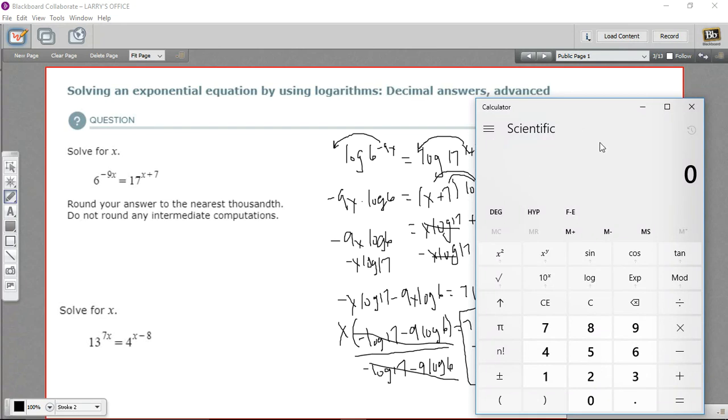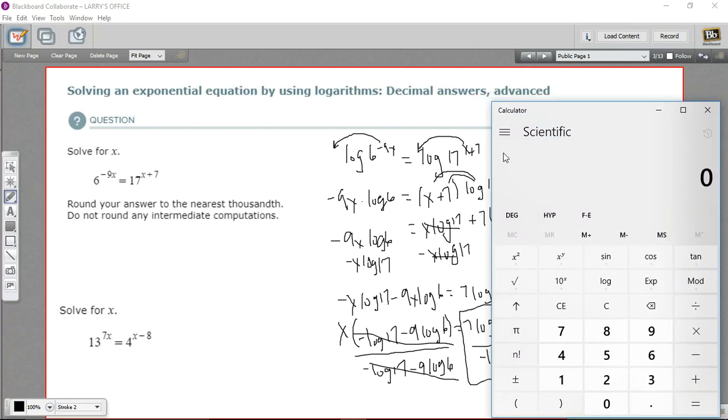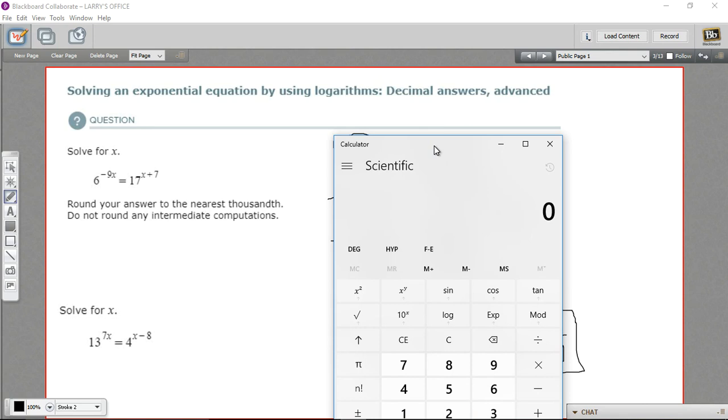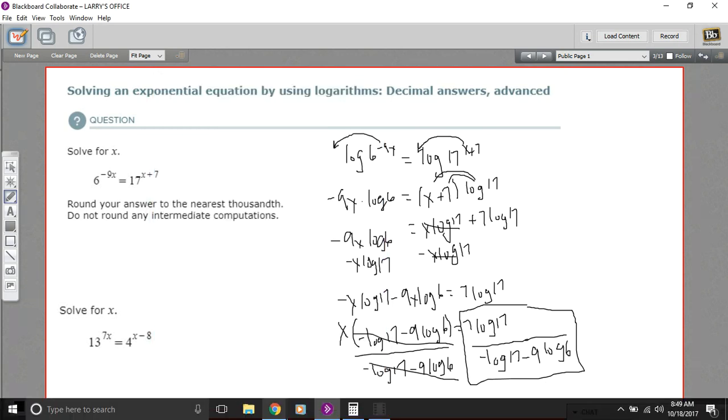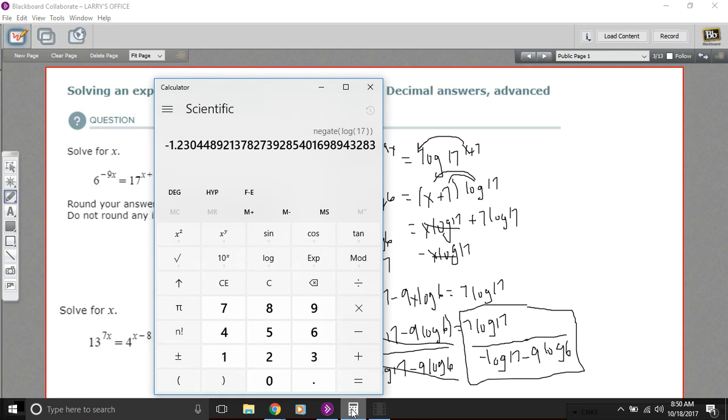Let's try that. They're telling us we want to round to the nearest thousandth when we finally get an answer, but not to round the intermediate computations. So let's try getting this bottom part first. So we've got the log of 17, and we'll make that negative. And this is 9 log 6.